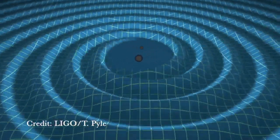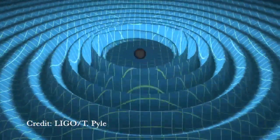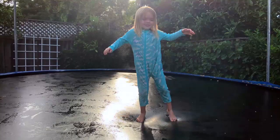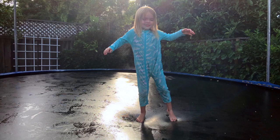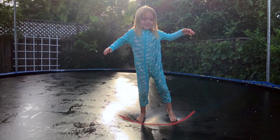Gravitational waves are ripples in the fabric of spacetime created by accelerating masses. To better understand this idea, imagine that the trampoline is spacetime. Our spacetime trampoline is warped by masses — this effect is gravity.